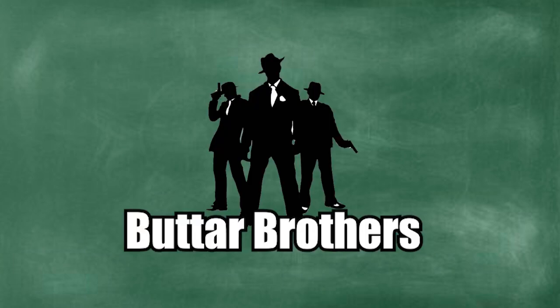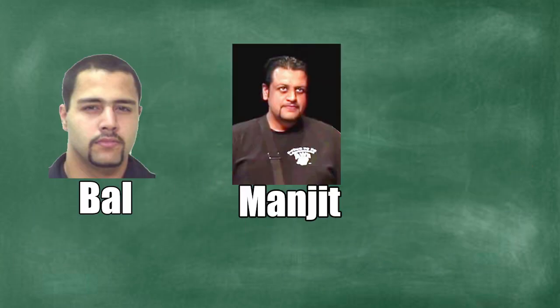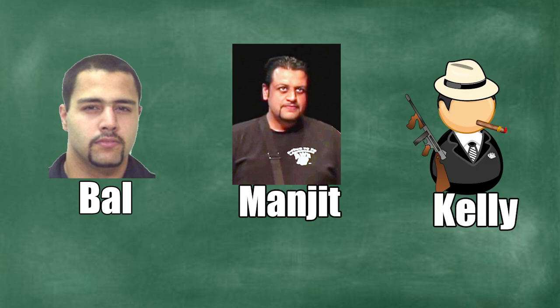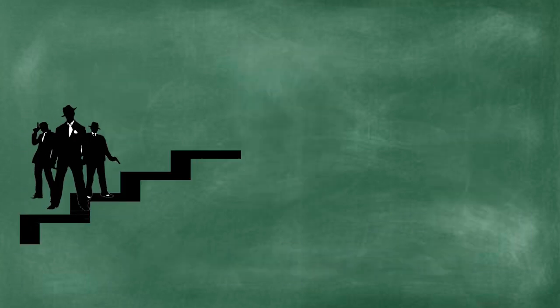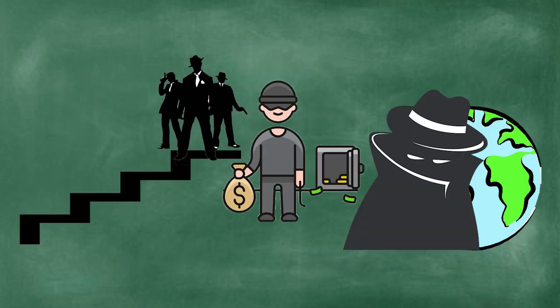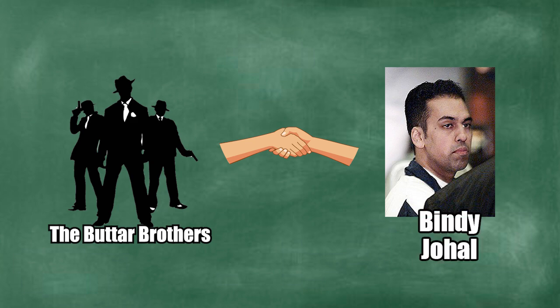Hey guys, in today's video, we'll be taking a look at the Buttar brothers from British Columbia, Canada. Bal, Manjeet, and Kelly have each played their role in the establishment of what has become the Indo-Canadian Mafia. We'll get into detail on how they climbed the ranks in the criminal underworld and even got involved with perhaps the most infamous Indo-Canadian gangster, Bindi Johal.